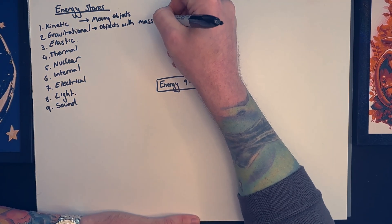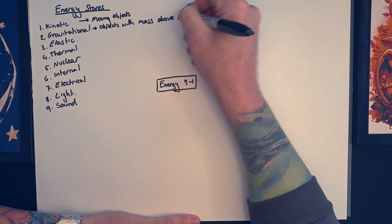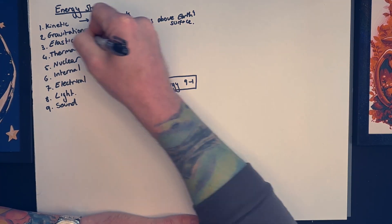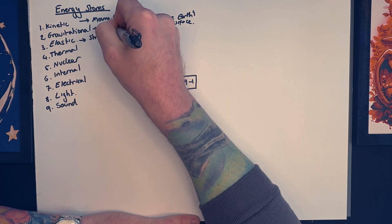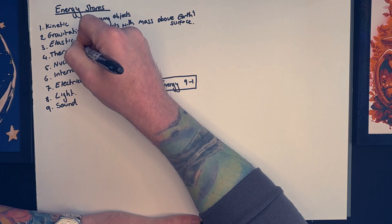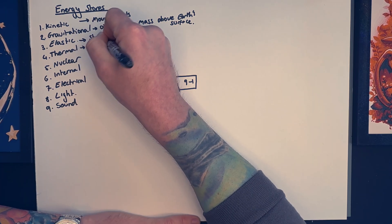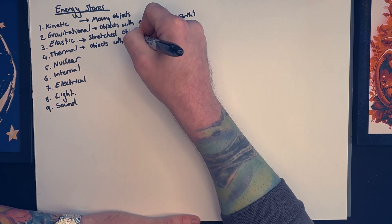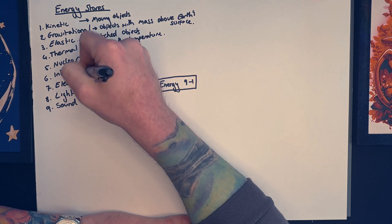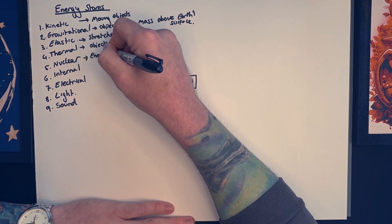Elastic energy is the energy stored in stretched objects, and thermal energy is stored in objects that have temperature. Nuclear energy normally comes from nuclear fission or fusion reactions. Internal energy is a weird one. It's worth knowing about. It is the sum total of kinetic energies and potential energies of particles in a system.